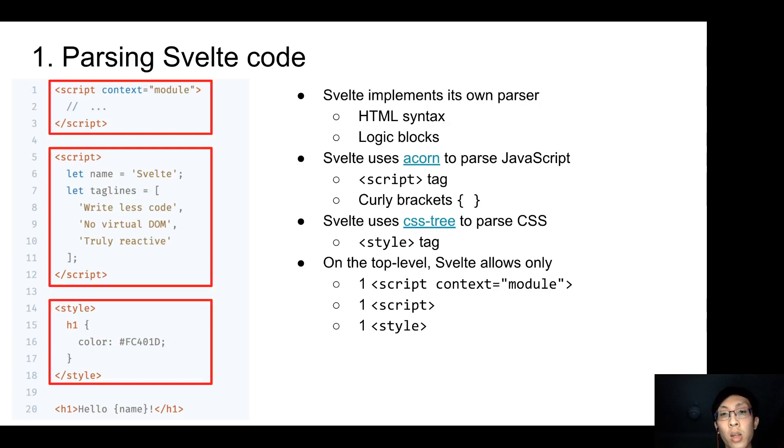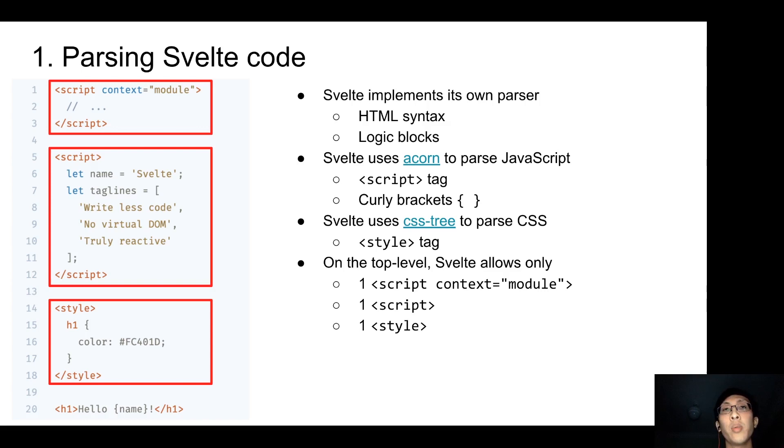Something that you might not know is that Svelte only accepts one module script, one instance script and one style tag. That is because in the final AST that Svelte creates, it contains HTML for the templates, a CSS-tree AST, an instance script AST and a module script AST.